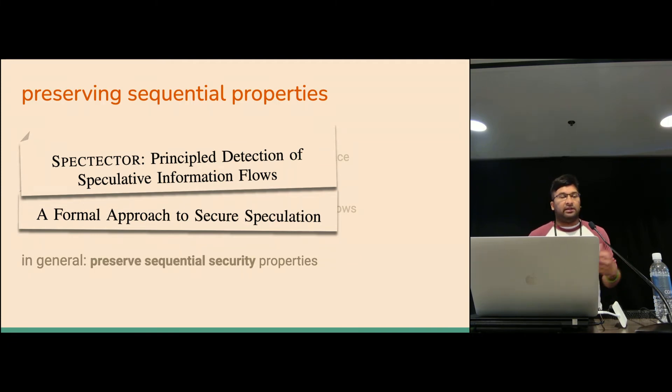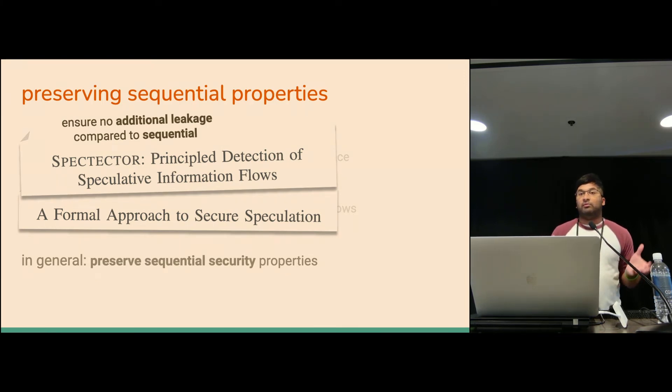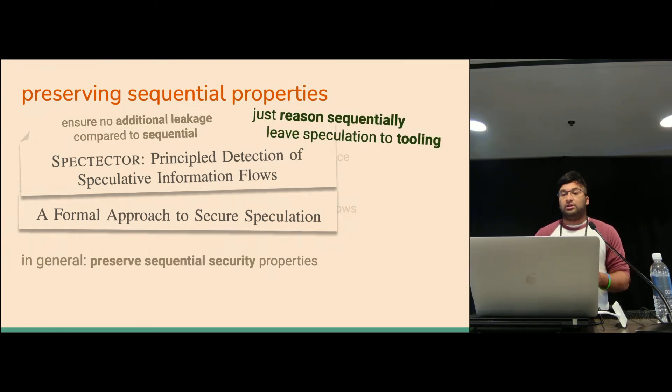Instead of having specific leakage models, they just say, we're going to look at what your program would have leaked under a normal sequential execution, what you kind of expect it to have leaked when you're running it. And we're just going to make sure that under speculative execution, you don't leak anything more. That frees up the developer to only have to reason about their program in a sequential context. You don't have to worry about what's going on in the underlying hardware. You just leave that up to one of these tools to protect you.